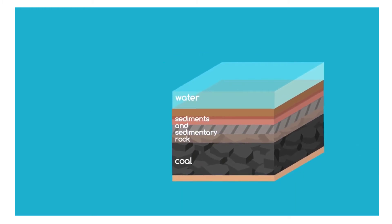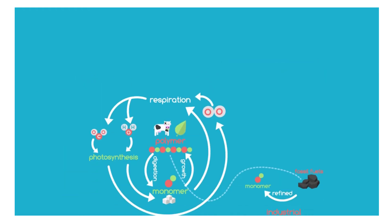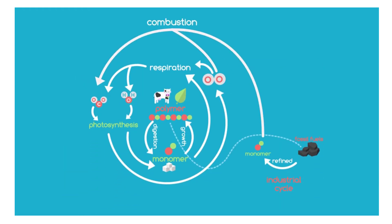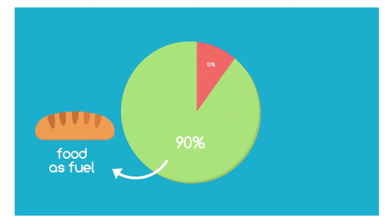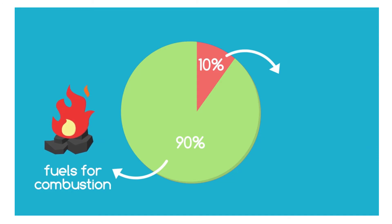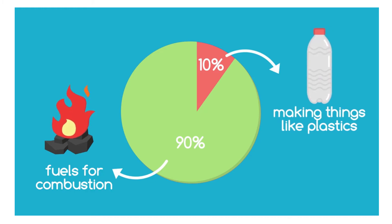However, when we burn fossil fuels, the carbon in them has been underground for hundreds of millions of years. And this adds new carbon dioxide to the atmosphere. Just as we use 90% of our food as a fuel and only 10% for building and repairing our bodies, so with fossil fuels, 90% are used as fuels and are combusted and only 10% are used to make things such as plastic.